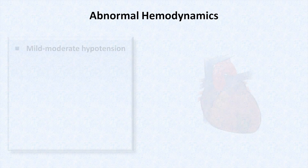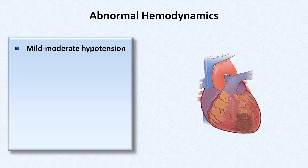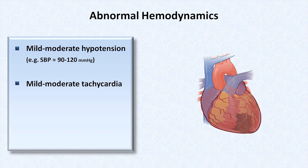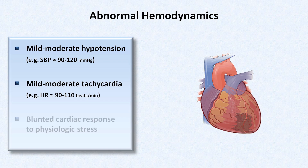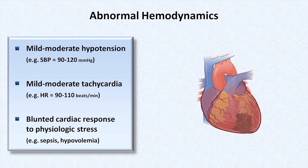Those were all findings caused by portal hypertension. The next set of findings relates to abnormal hemodynamics. There are three: mild to moderate hypotension, whereby a typical systolic blood pressure of a cirrhotic patient is 90 to 120 mmHg; mild to moderate tachycardia, with a typical resting heart rate of 90 to 110 beats per minute; and a blunted cardiac response to physiologic stress — so even if cardiac output at baseline is increased, heart rate and contractility are unable to increase further in the setting of sepsis or hypovolemia. This has been referred to as cirrhotic cardiomyopathy. The etiology is not entirely clear, though there is strong speculation it comes from an as-yet unidentified circulating vasoactive substance.